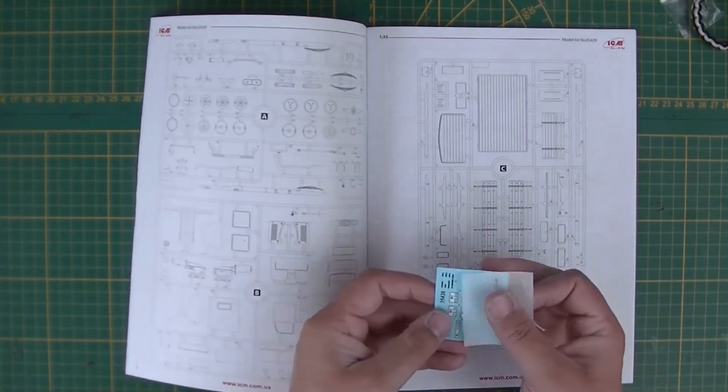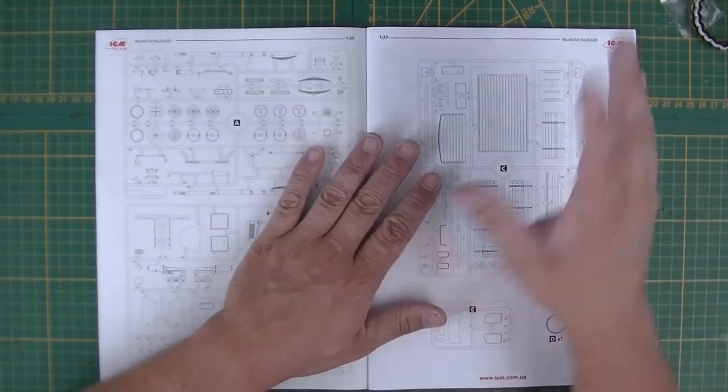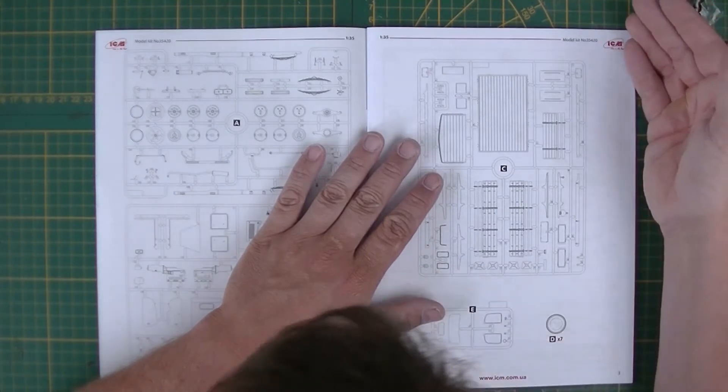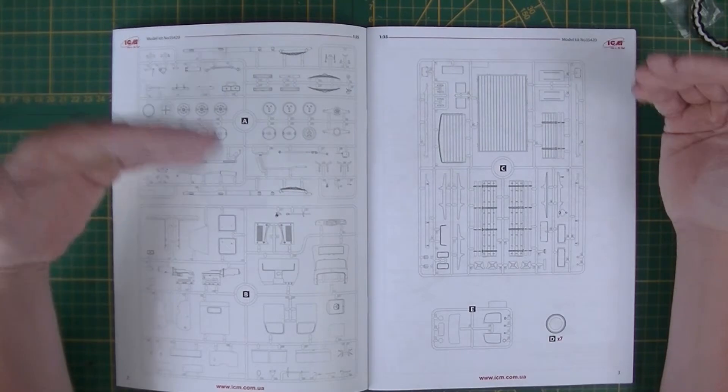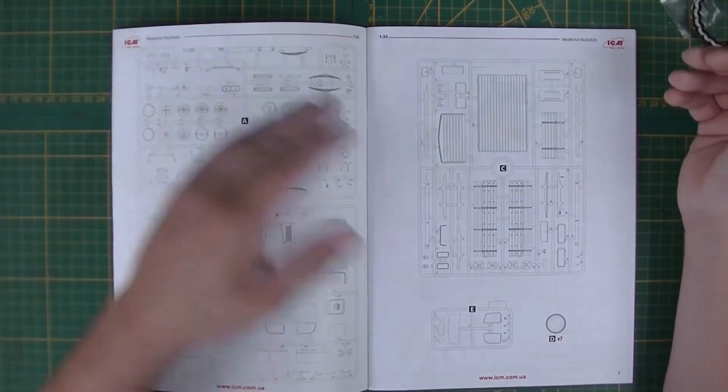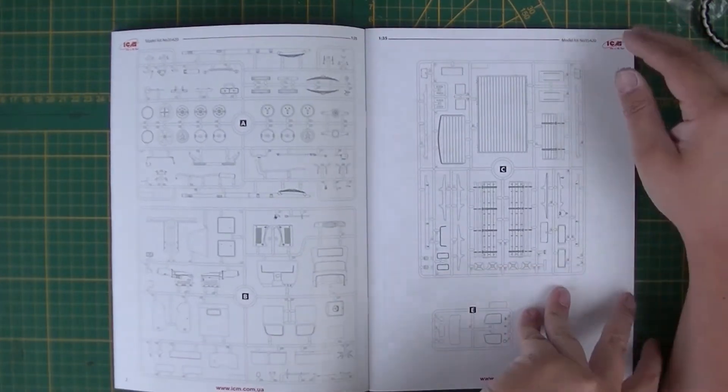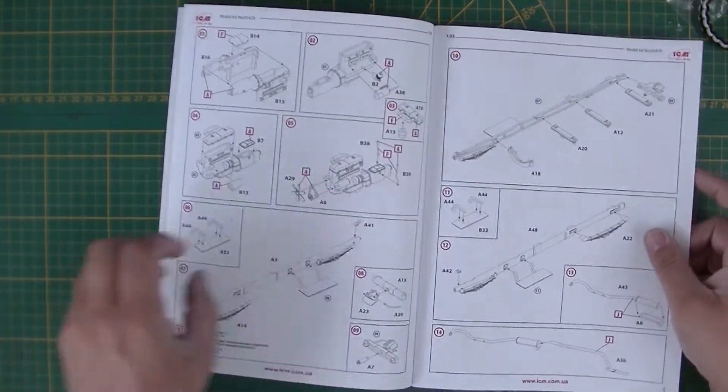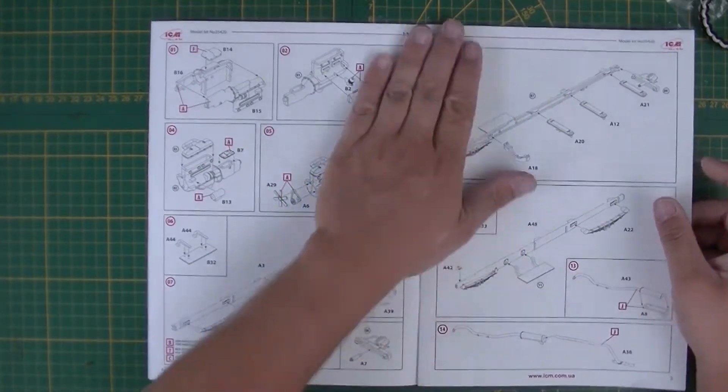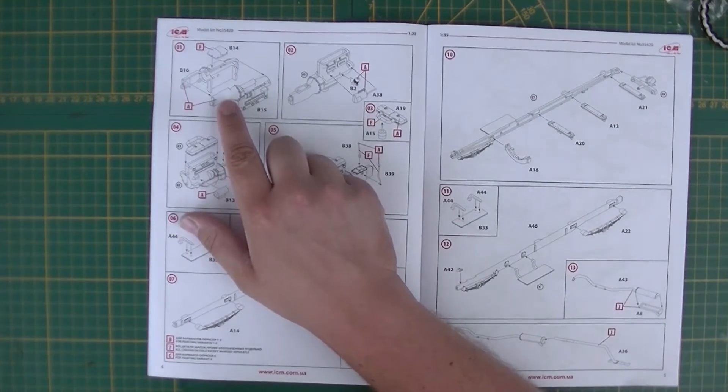I'll show you the decals later. This is numbered and the pictures are large, which is also a good thing. This is normal paper but also in color. It looks like they start with building up the engine.